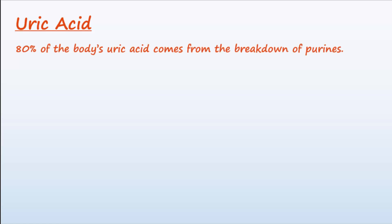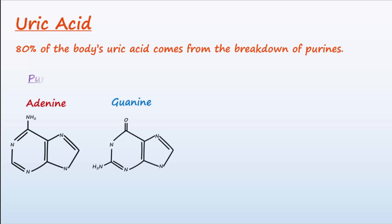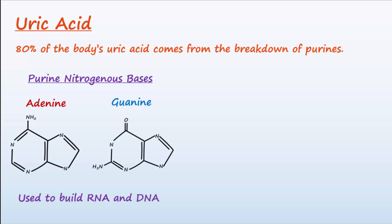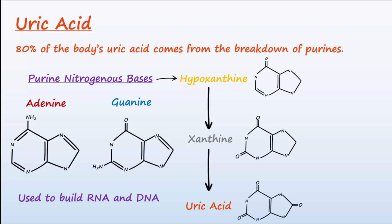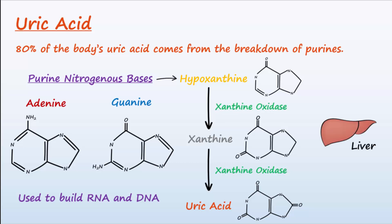So where does all this uric acid come from? 80% of our body's uric acid comes from the breakdown of purines. Adenine and guanine are purine nitrogenous bases used in nucleotides to build RNA and DNA. When a cell dies, these purines must be disposed of. The body does this by converting purines into hypoxanthine, which is then converted into xanthine, and finally to uric acid. This breakdown, or metabolism, is performed by the enzyme xanthine oxidase, and is carried out mainly in the liver, contributing to roughly 80% of the body's uric acid.